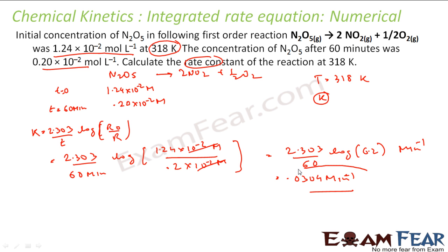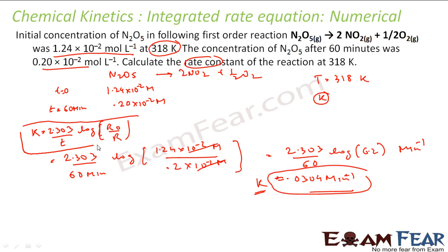So that means this is my k. It's just a simple application of the formula. Most of the numericals we will see here involve applying the formula derived for first order reactions: k = 2.303 / t × log(r₀ / r), where r₀ is the initial concentration and r is the final concentration.